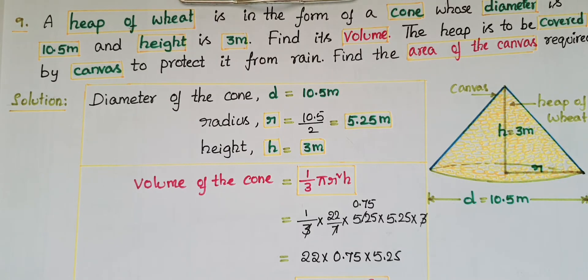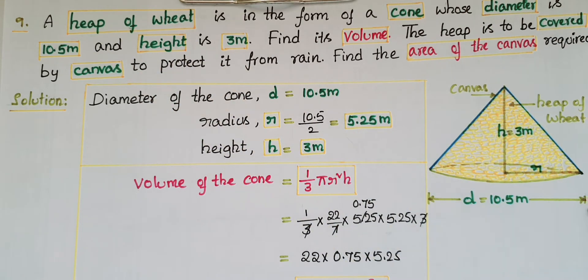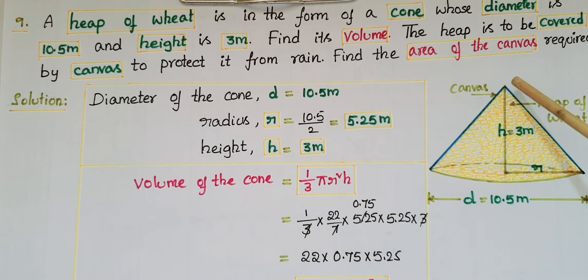Hello everyone, today I am going to solve problem number 9 from Exercise 13.7 on surface areas and volumes from NCERT Class 9. A heap of wheat is in the form of a cone whose diameter is 10.5 meters and height is 3 meters.